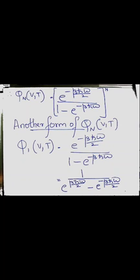Next, we write the same partition function in a different form. Starting from Q1(V,T) = e raised to minus beta h-bar omega over 2, divided by (1 minus e raised to minus beta h-bar omega), we divide numerator and denominator by e raised to minus beta h-bar omega over 2, to get Q1(V,T) = 1 divided by (e raised to beta h-bar omega over 2 minus e raised to minus beta h-bar omega over 2).